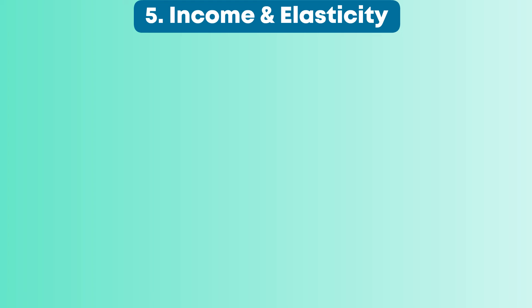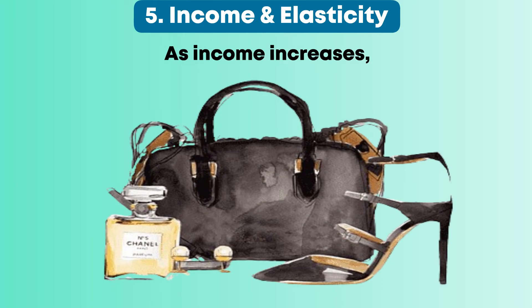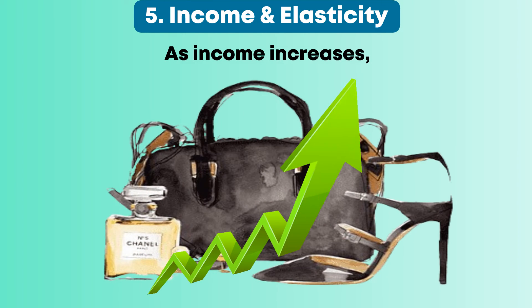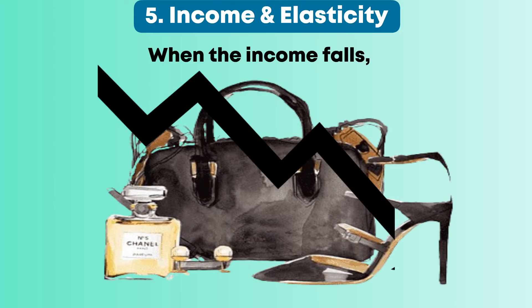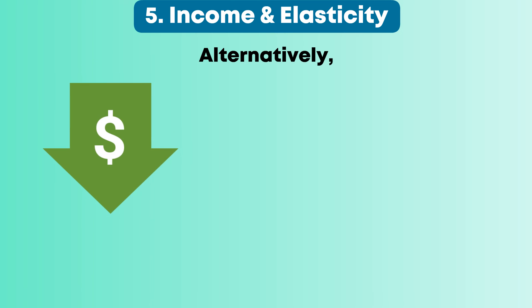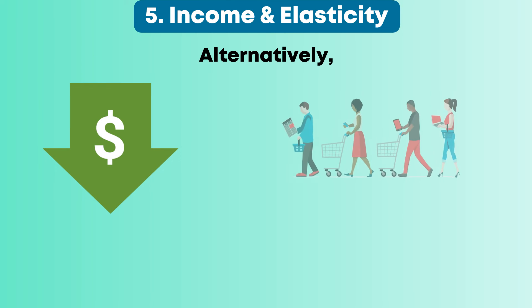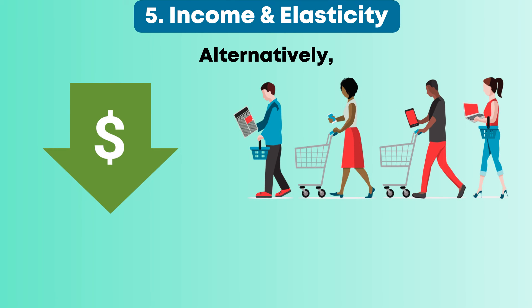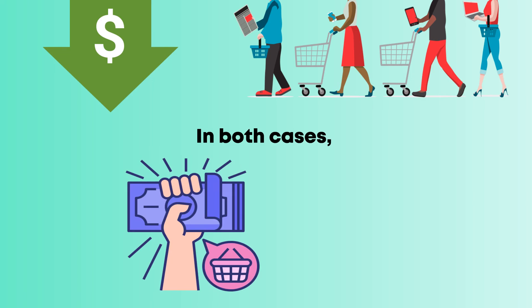Five, income and elasticity. As income increases, the demand for superior goods also increases. When income falls, demand also slopes down. Alternatively, as the price drops, consumers can buy more goods. In both cases, the customer's purchasing power goes up.